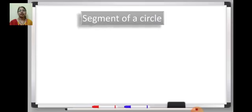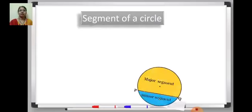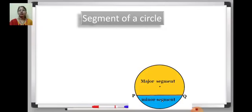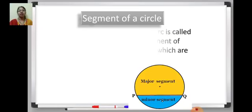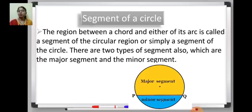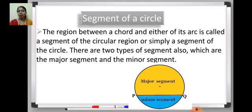Then comes segment of a circle. Here is a circle; PQ is a chord, and this chord PQ divides the circular region into two parts. Each part is known as a segment of a circle. The part that contains the center is known as the major segment, and the other part is called the minor segment. The region between a chord and either of its arcs is called a segment of the circular region, and there are two types: major segment and minor segment.